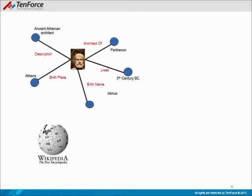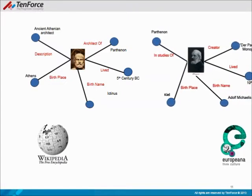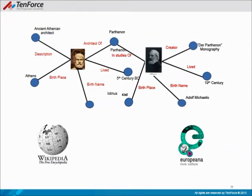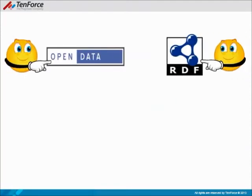Let's continue our story. Ictinus is in Wikipedia, related to Parthenon and described in RDF, while Adolf Mikaelis, who is also related to Parthenon, is in Europeana. So now we can link the two datasets together, make them act as one and create a whole. Why were we able to link? Because both datasets are expressed as open data and because both are described through RDF. This is how we can have linked open data.